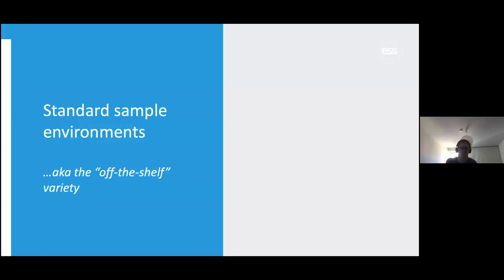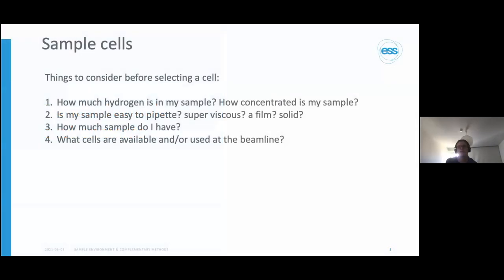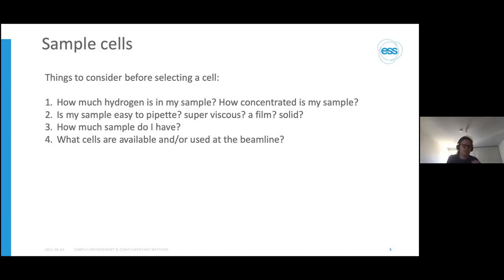Starting with standard sample environments — the off-the-shelf variety — we'll begin with sample cells. When I say sample cells, these are the cell holders, the individual cartridge or device holder for each individual sample you want to measure, whether that be a series of protein concentrations, polymer concentrations, gels, or different magnetic samples. In order to put them in the SANS beamline, you need to hold them in some way.